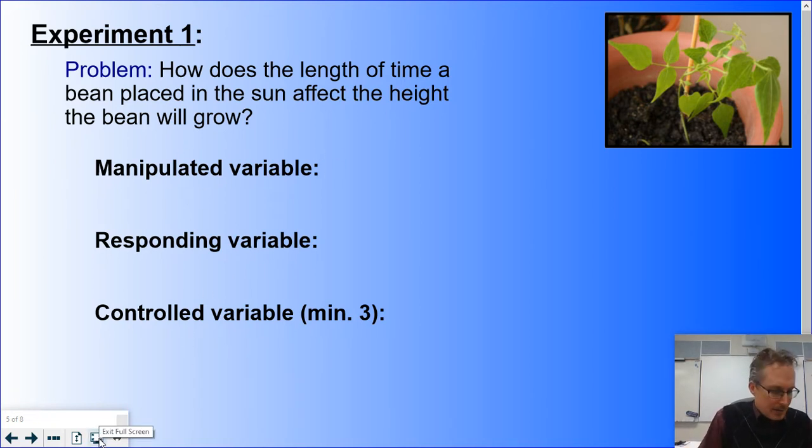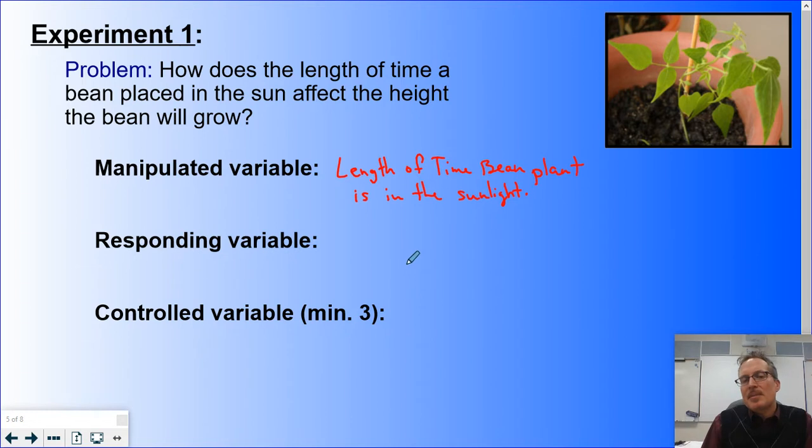I am manipulating the length of time. So, length of time bean plant is in the sun. Because we are manipulating the length of time a bean plant is in the sunlight, what do we expect to see? What is going to respond because of that? A good problem will tell you the manipulated and the responding. The responding variable is going to be the height of bean seed.